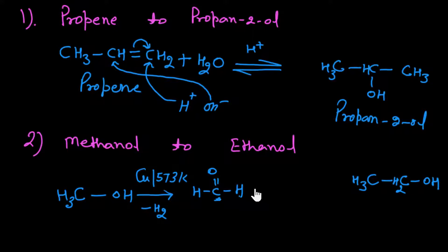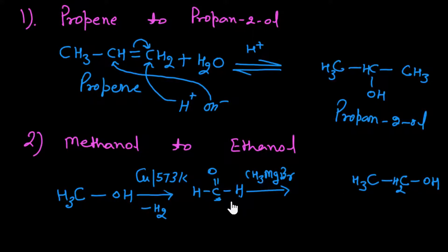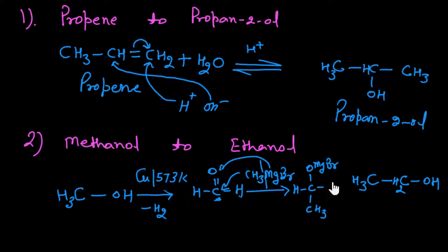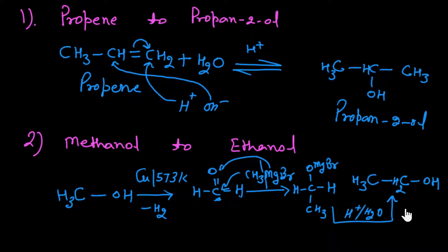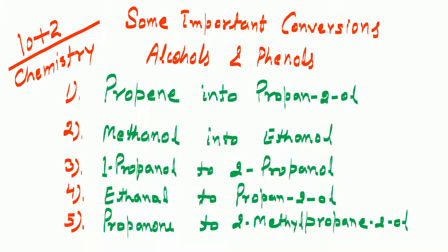So methanal is formed from methanol. Now since we have a carbonyl group, we can react it with a Grignard reagent. Since we need only one extra carbon, we take CH₃MgBr. When Grignard reagent reacts with methanal, HMgBr goes to oxygen and CH₃ attaches to the carbon, giving CH₃–CH₂–OMgBr. We then do acid hydrolysis, MgBr is removed, OH attaches, H is added, and ethanol (CH₃CH₂OH) is formed. That completes the conversion of methanol to ethanol.